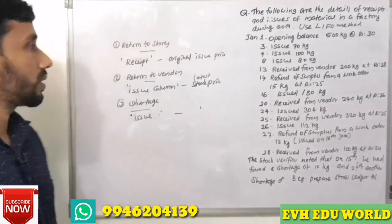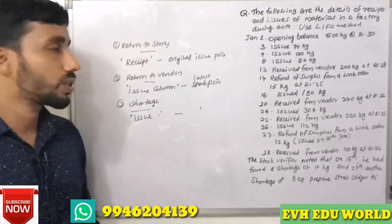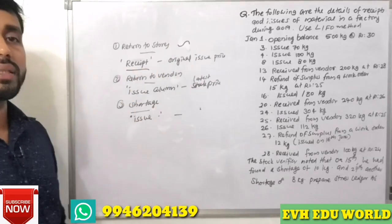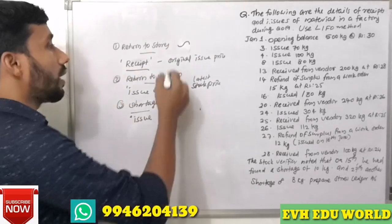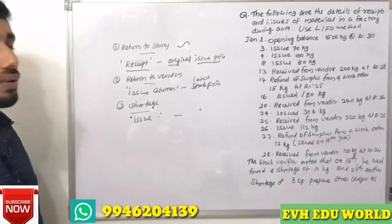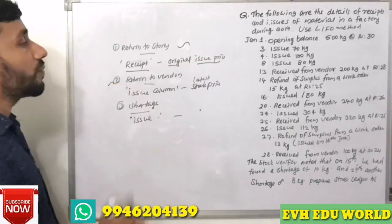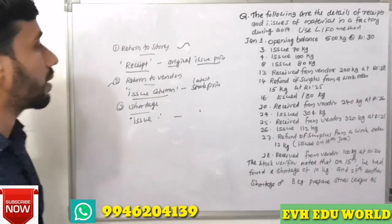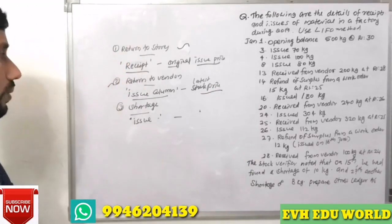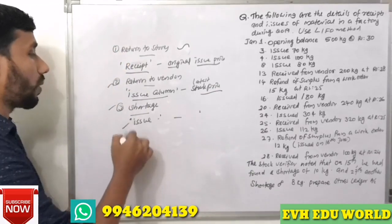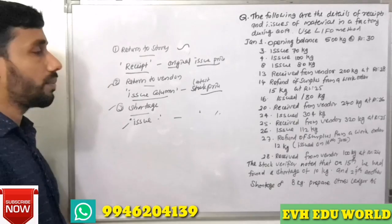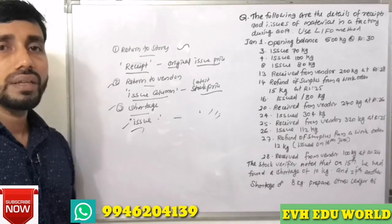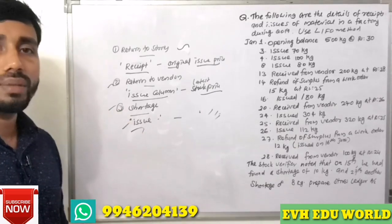For the LIFO method, we have to prepare the store ledger account. When material returns to store, we enter the FIFO issue price originally. When it returns to the vendor, we have to enter the purchase price. In the LIFO method, we apply the LIFO method for pricing.